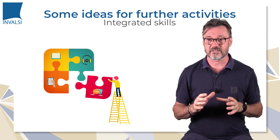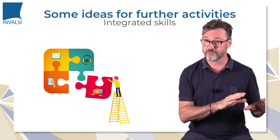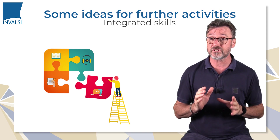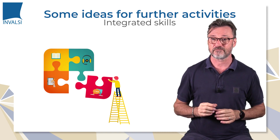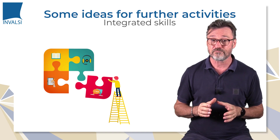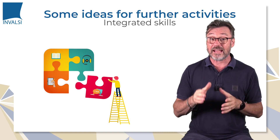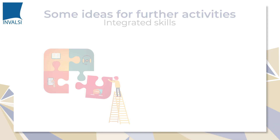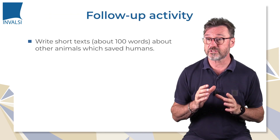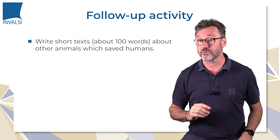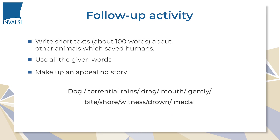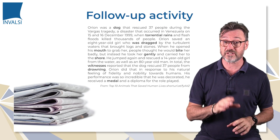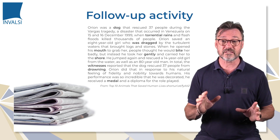Although standardised tests focus on receptive skills — listening and reading — it's recommended to practice all four language skills in class. Authentic reading texts lend themselves perfectly to integrating skills. The integrated skill activity we suggest is still related to the topic of the reading text and introduces a guided writing activity. We're going to ask students to write short texts, about 100 words, about other animals which saved humans, by using some prompts. We're then going to tell students to compare their short texts and the authentic news stories. A class discussion can follow. You can download these authentic news stories by clicking on the link below.